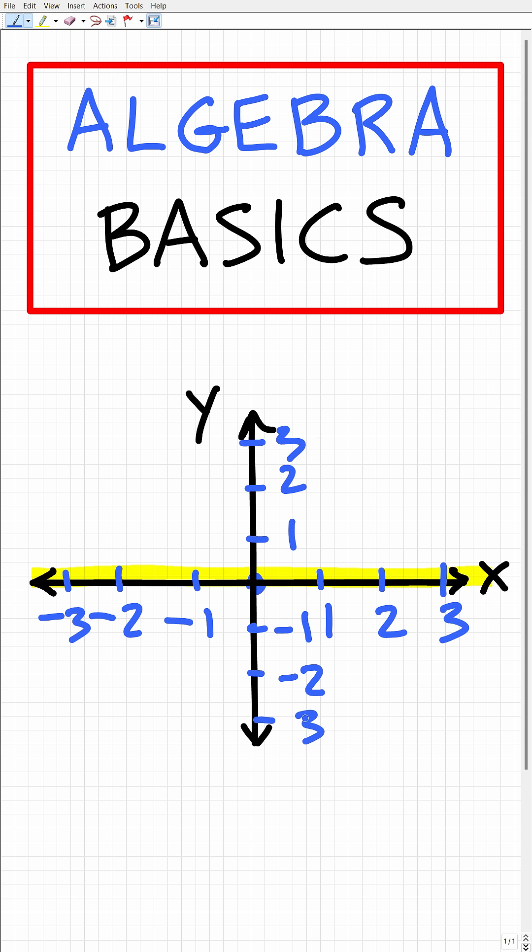So this is our coordinate system. The whole point of this is to locate particular points and to plot graphs. How does this work?